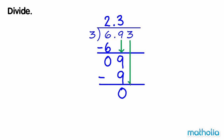Bring down the hundredths. 3 hundredths divide 3 equals 1 hundredths. 3 times 1 hundredths equals 3 hundredths. 3 hundredths subtract 3 hundredths equals 0. So 6.93 divide 3 equals 2.31.